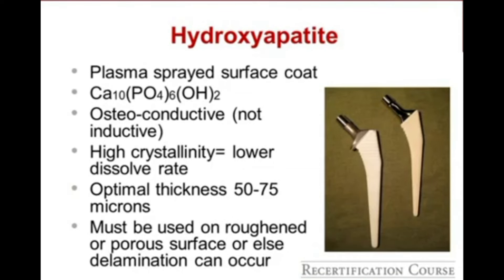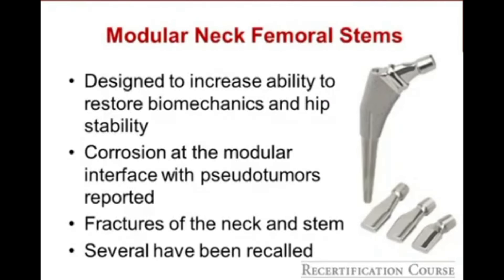Hydroxyapatite is an important surface coating. Its chemical structure has been tested in the past. Remember that hydroxyapatite is osteoconductive — it is not osteoinductive. It is a surface coating and can delaminate off the stem if in-growth does not occur through the hydroxyapatite and into the stem underneath as well.